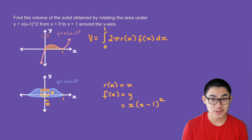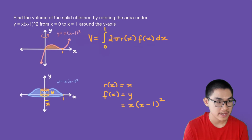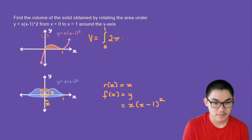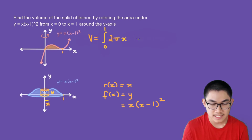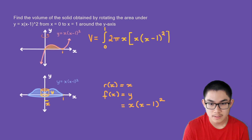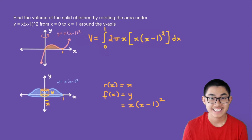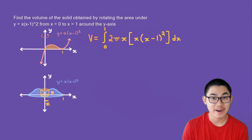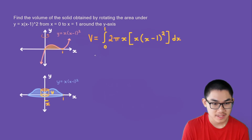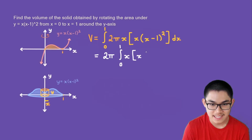The next thing we should do is substitute these formulas back into our formula. The radius is simply x, and the height f(x) is x times (x minus 1) to the power of 2, times dx. So V is equal to 2 times pi times the integral from 0 to 1 of x times x times (x minus 1) to the power of 2 dx.